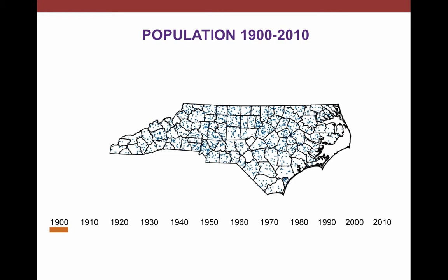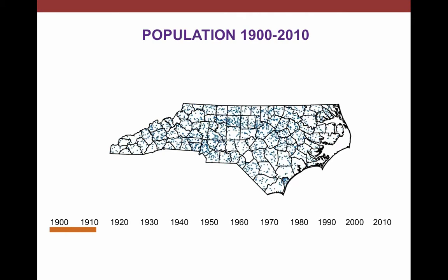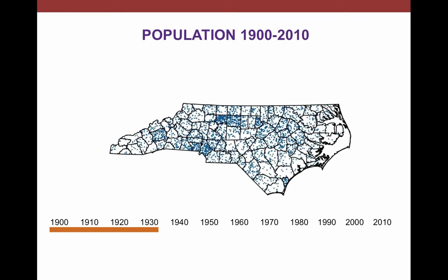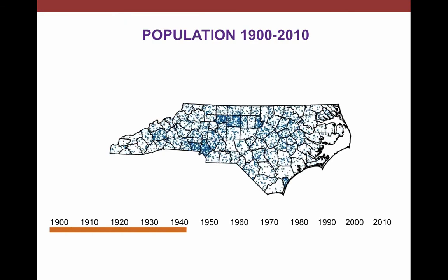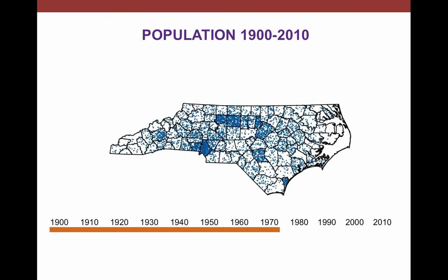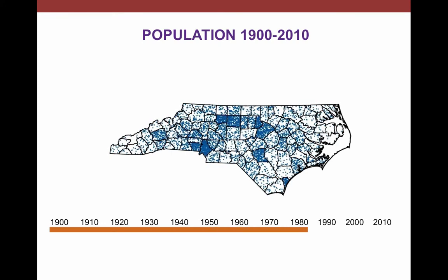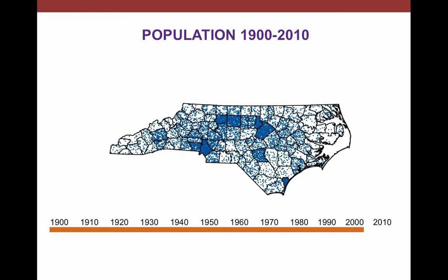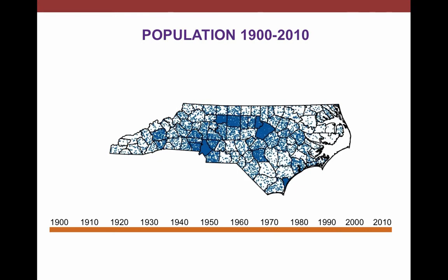On this map, each blue dot represents about 5,000 people. As we can see, in 1900, people were very evenly spread out across the state. But as time passes, the population becomes more and more concentrated in a few areas — these are our urban areas. In a sense, two different North Carolinas have emerged: urban North Carolina and rural North Carolina.